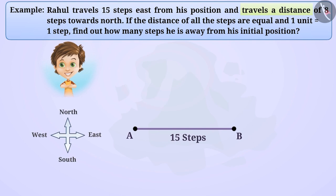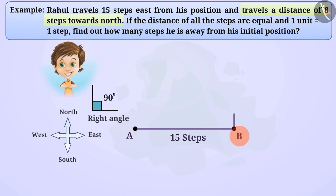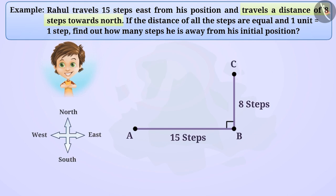From the question, Rahul travels a distance of 8 steps towards north from point B. Since the north and the east sides form a right angle, we will draw a line segment forming a right angle with line segment AB from point B, whose length will be 8 steps. We will name this line segment BC.